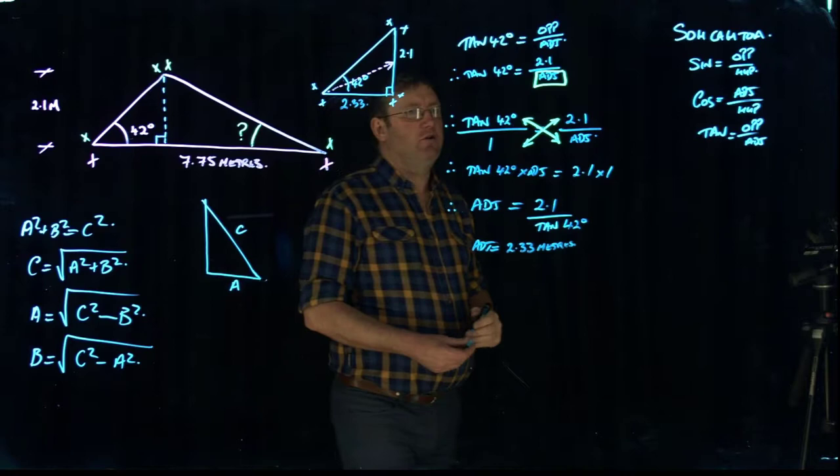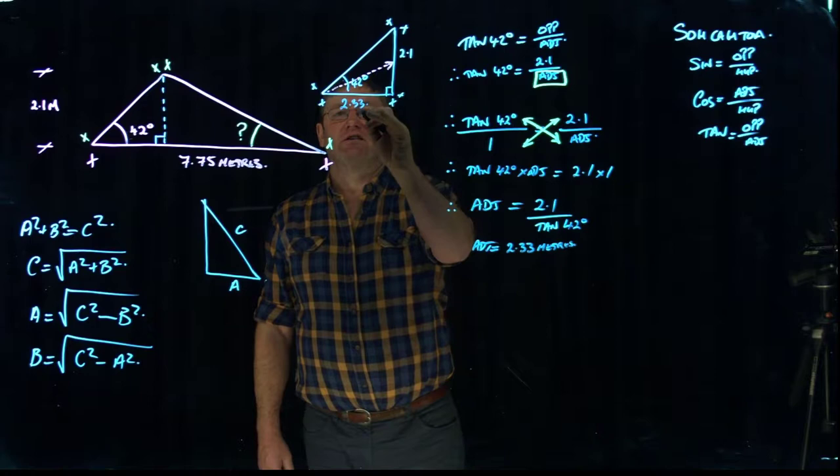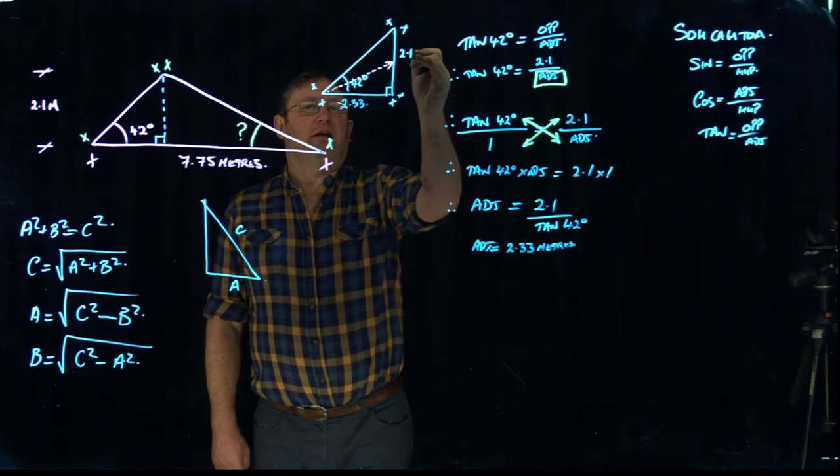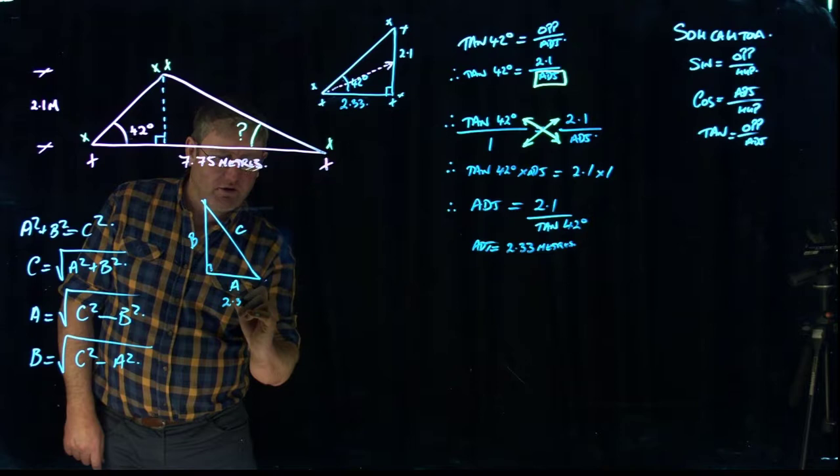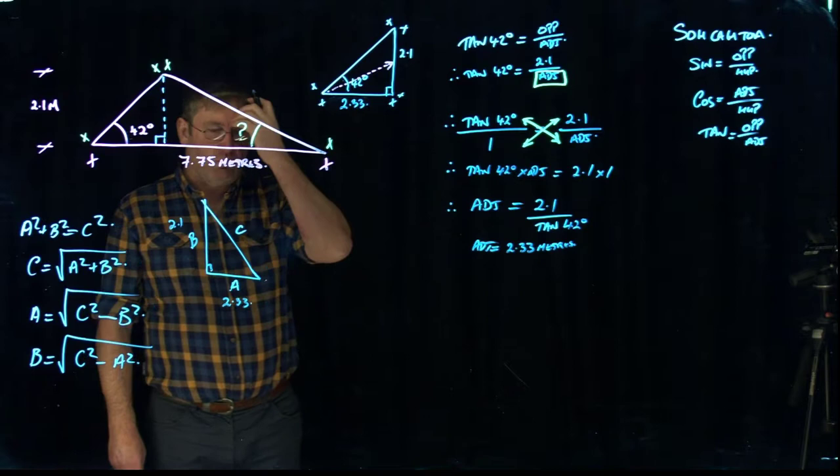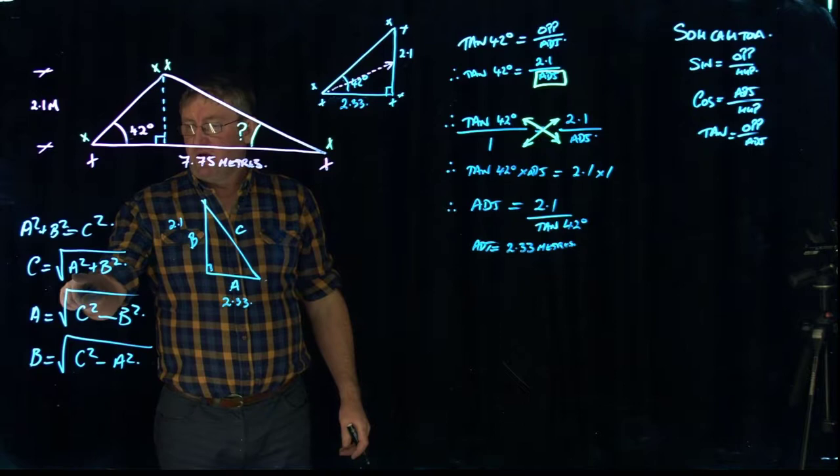So we've used trigonometry because we've got one angle and one length. And that has allowed us to determine another length. So now that we've done that, we've effectively got A and B in a right angle triangle. So I'm going to say that the A is the 2.33 and the B is the 2.1. And now we can determine C with Pythagoras' theorem. So because we've got the two short lengths, the A and the B, we square those to give us the C. So it's going to be the top formula.